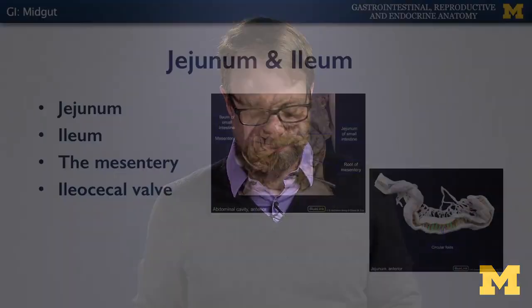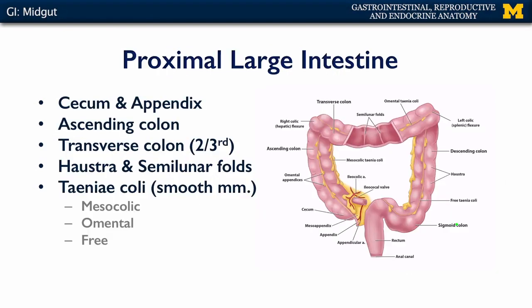From the ileum, chyme — the materials that once were food — passes through the ileocecal valve into the large intestine. Here we can see the ileocecal valve passing into the large intestine.